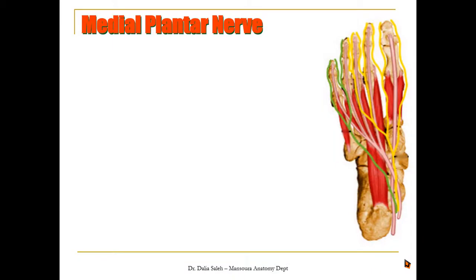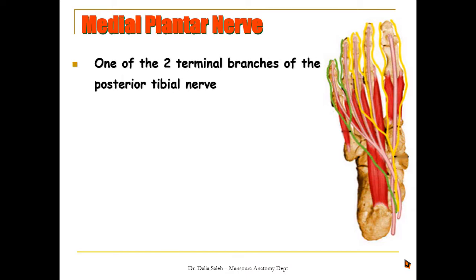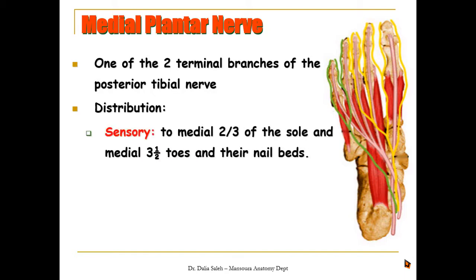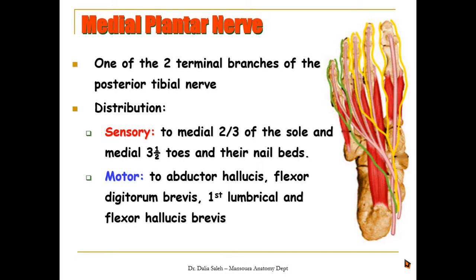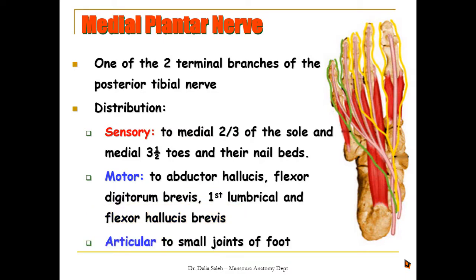For the nerves of the sole, the medial and lateral plantar nerves both arise as terminal branches of the posterior tibial nerve, each giving muscular, cutaneous, and articular branches. The medial plantar nerve supplies the medial two-thirds of the sole and the medial three and a half toes to the level of the nail beds. Its motor branches supply four muscles: in the first layer — abductor hallucis and flexor digitorum brevis; in the second layer — the first lumbrical; and in the third layer — flexor hallucis brevis. It also gives articular branches to the small joints of the foot.